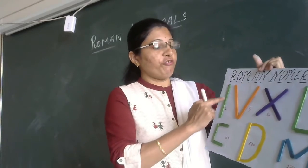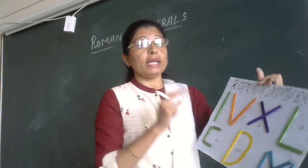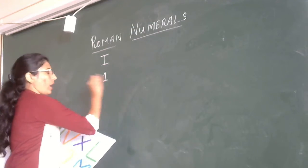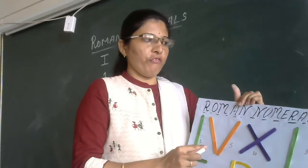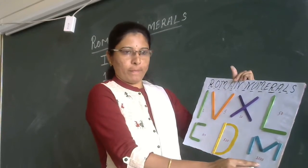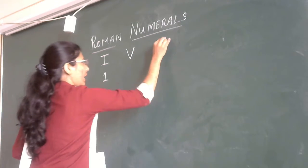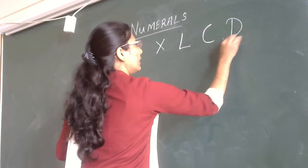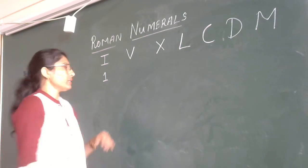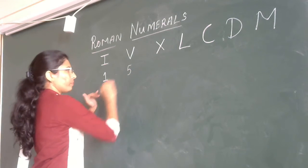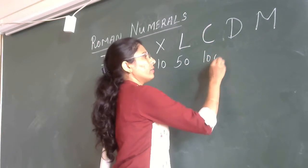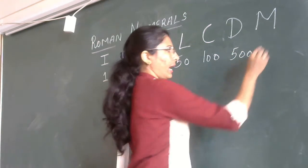The 7 symbols are: I, V, X, L, C, D, and M. In Hindu Arabic, I is 1, V is 5, X is 10, L is 50, C is 100, D is 500, and M is 1000.